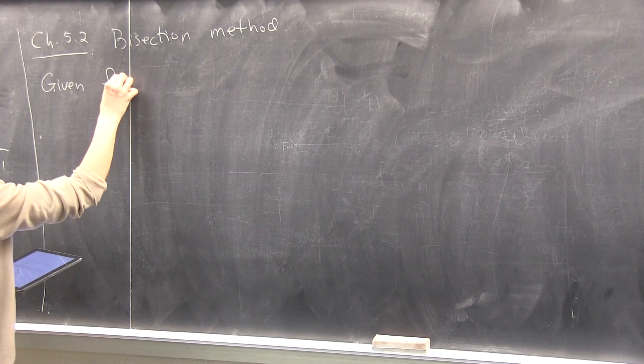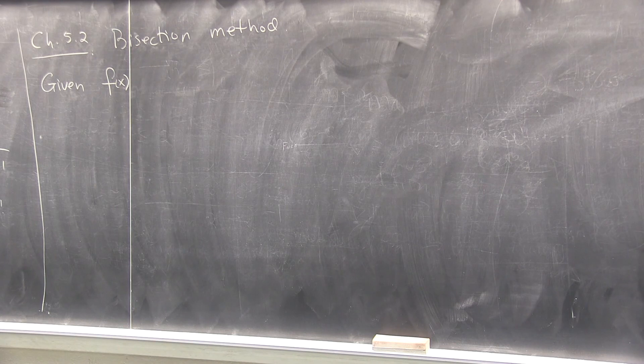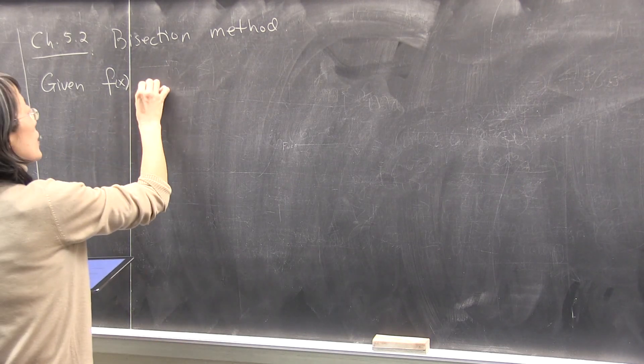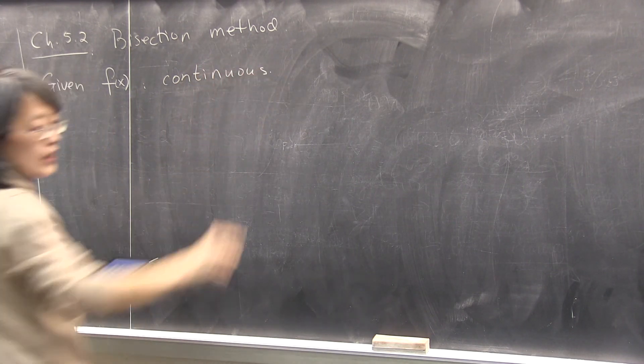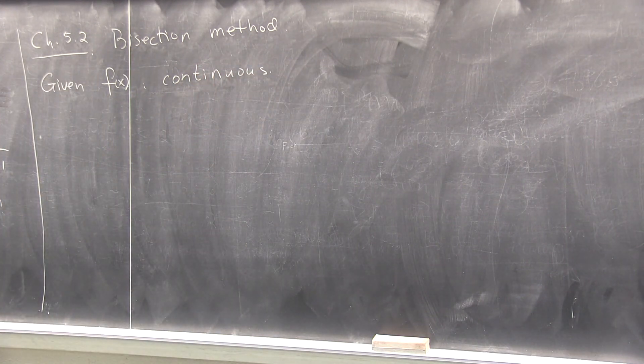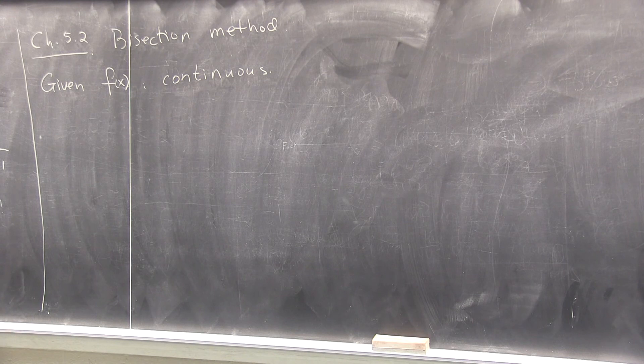So I need a function f of x, I want to find its zeros. I need some basic assumptions. That is, it has to be continuous. If it's not continuous, it has a jump, then you cannot define the roots in a nice way. Then you have to generalize the definition. So let's say it is.